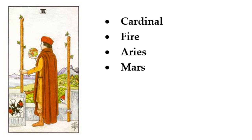So we can look at the Two of Wands — a card of future planning, progress, decisions, and discovery — and then add all of these additional layers: the inspiration of fire, the cardinal energy of initiation, the bold and direct approach of Aries, and the courage and confidence of Mars. And now we have something far more multifaceted to work with.